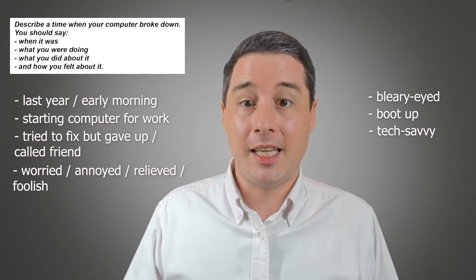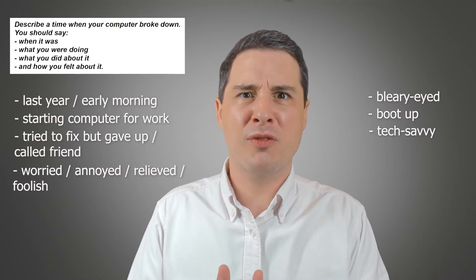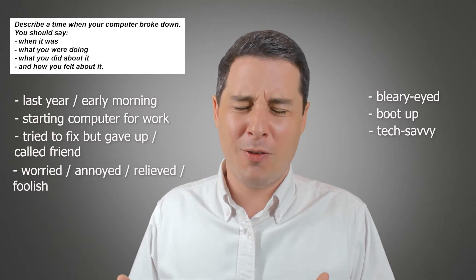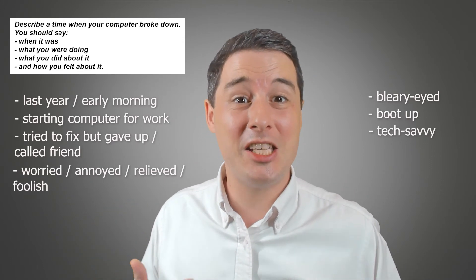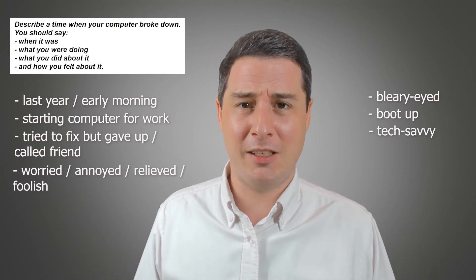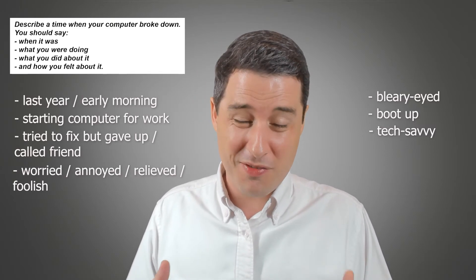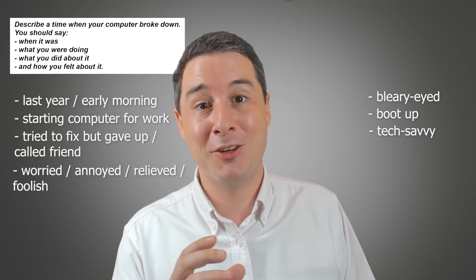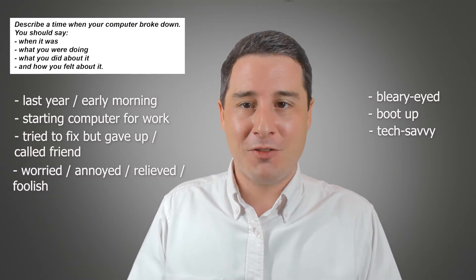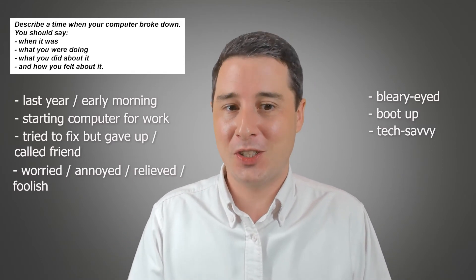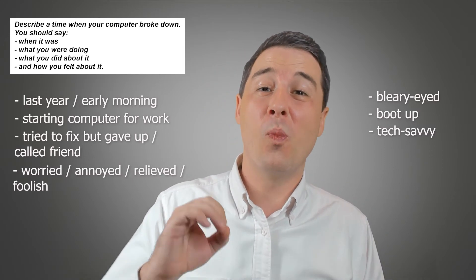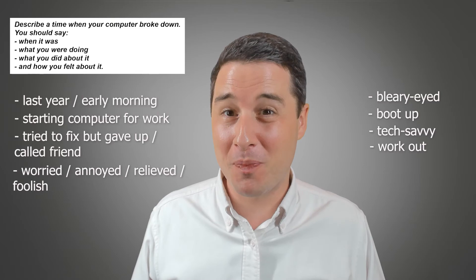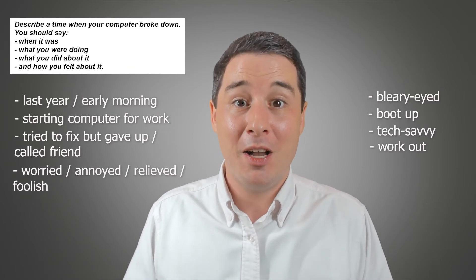Moving on to the final idea — how I felt about it. I had those four adjectives: worried, annoyed, relieved, foolish. Here I could think of not another adjective, because I've got plenty, but maybe a phrasal verb — some idiomatic vocabulary that connects with one of those feelings. The fact that I felt foolish: why did I feel foolish? It was because I couldn't really solve the problem with my computer. We could use a phrasal verb as a synonym for 'solve': 'work out.' I couldn't work out what the problem was. 'To work something out' is a nice phrasal verb — idiomatic vocabulary that will really push the speaking score up.